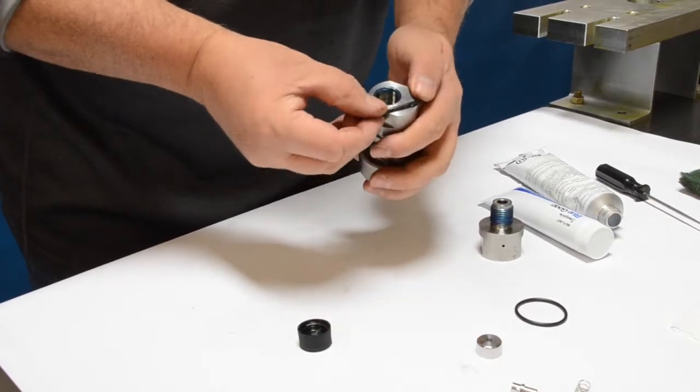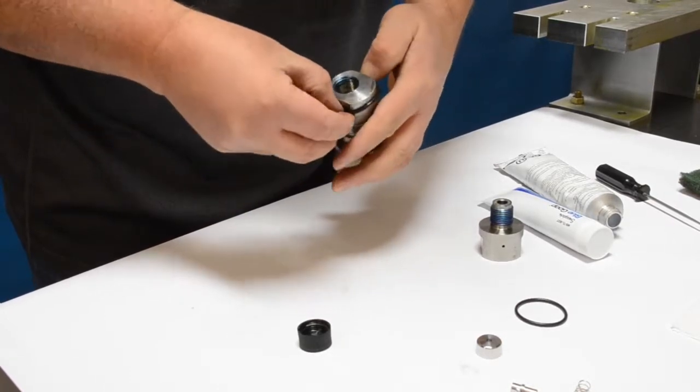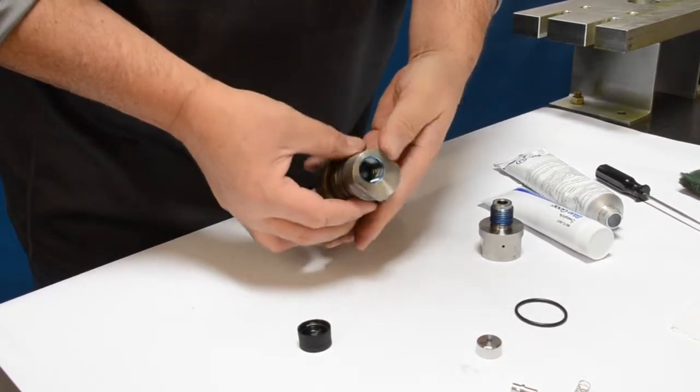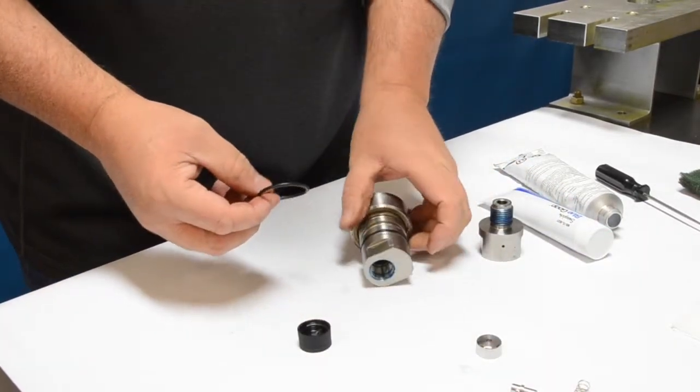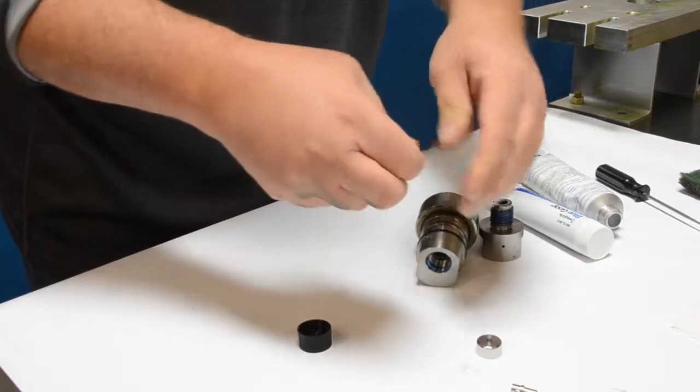Putting the o-rings on can be a little bit difficult, but go ahead and push them over the diameter of the check valve. I always like to put the first o-ring in the first groove to make it a little bit easier to get that second one on.